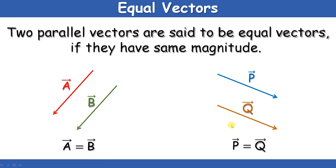These parallel vectors can have the same magnitude or different magnitude. Here, vector A and vector B are equal because they are parallel to each other and have the same length — so vector A equals vector B. In the same way, vector P equals vector Q because direction is the same and magnitude is also the same. So they are known as identical vectors or equal vectors.